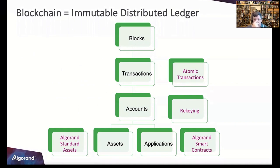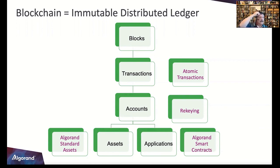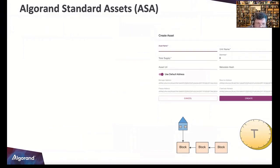Mapping these onto our diagram: atomic transactions wrap around transactions — you can group one or more into an atomic transfer, meaning it all fails or all works. Accounts can be rekeyed by swapping out the private key. Algorand smart contracts are the applications, and standard assets — ASAs — are tokens. There was a question about NFTs: on Ethereum, NFTs are created with smart contracts, but on Algorand they're native to layer one.